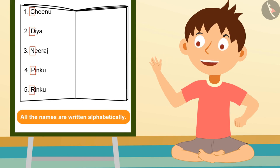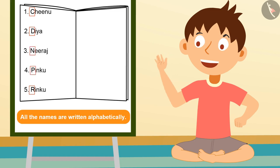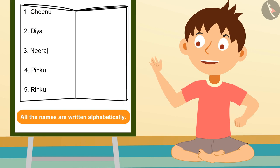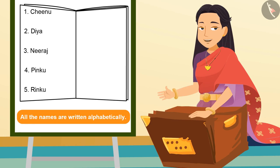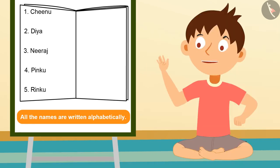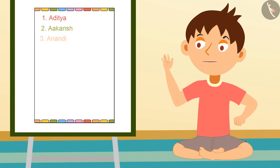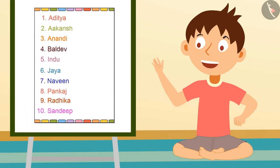Pinku's name starts with P and Neeraj's name starts with N, and in the alphabet N comes before P, so Neeraj's name is written before Pinku's. Very good! Ma'am, our school teacher has also written names in the same order.